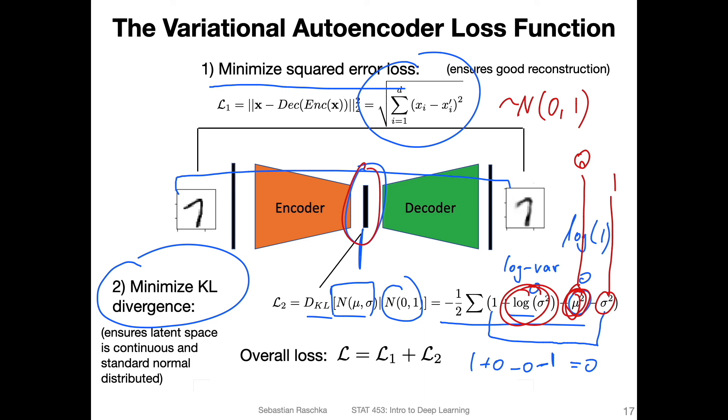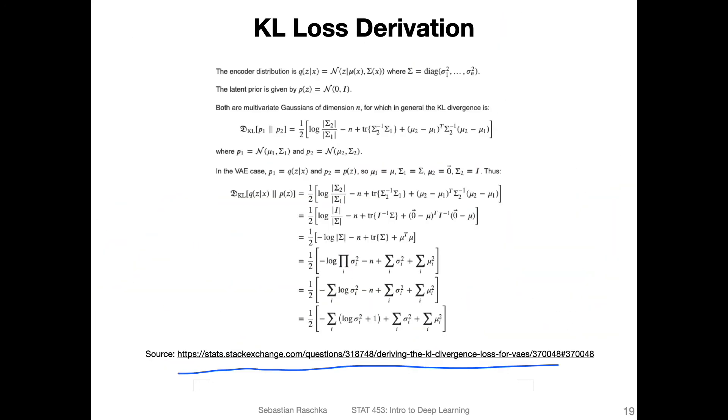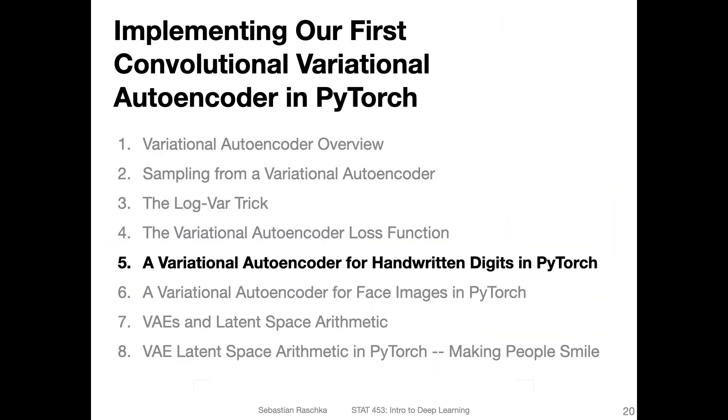Alright, so this is essentially in a nutshell the variational autoencoder loss function. Again, if you're interested, you can take a look at the loss derivation. And now in the next video, I will finally show you how this all comes together in a code example where we have the sampling aspect and log var trick and loss function, everything together in one code example, where I will show you that we can train this autoencoder to generate handwritten digits. But since handwritten digits are by now, I think, a little bit boring, we will also use a second dataset and apply this concept to face images.